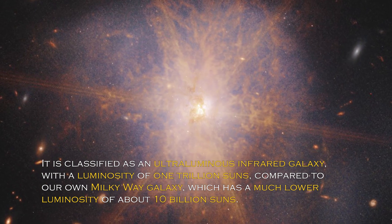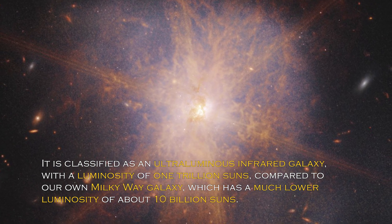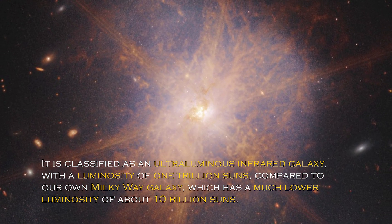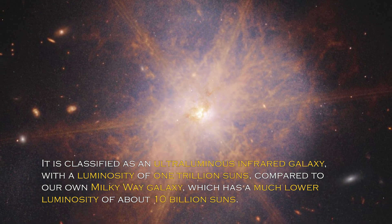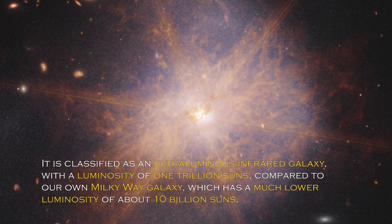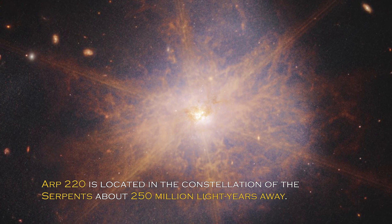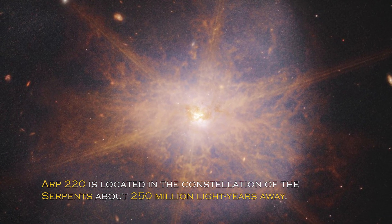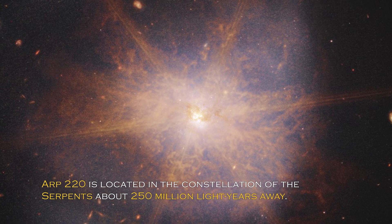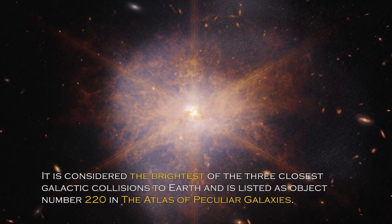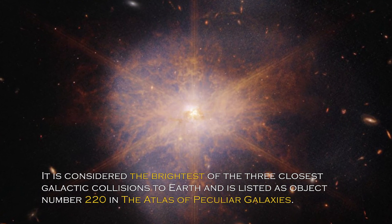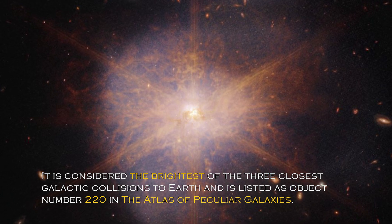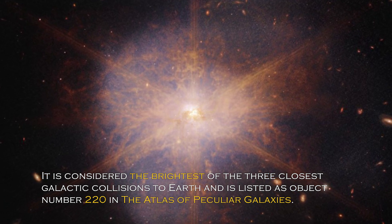It is classified as an ultra-luminous infrared galaxy with a luminosity of one trillion suns compared to our own galaxy, the Milky Way, which has much lower luminosity of about 10 billion suns. ARP 220 is located in the constellation of the Serpens, about 250 million light-years away. It is considered the brightest of the three closest galactic collisions to Earth and is listed as object number 220 in the Atlas of Peculiar Galaxies.